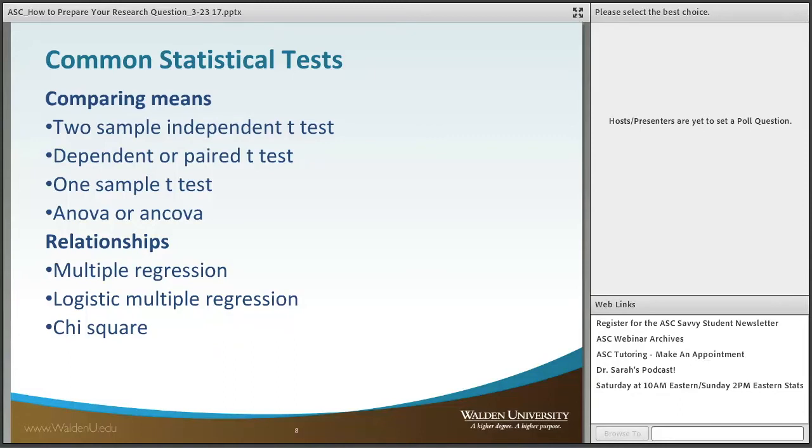The t-test only allows two—we cannot have three, four, or five groups, just two. And the t-test is used when we don't know the population standard deviation, and we rarely know that because if we knew all that to begin with we probably wouldn't be doing the research.